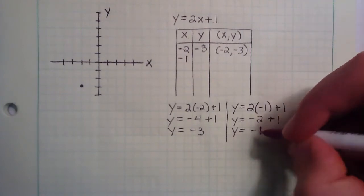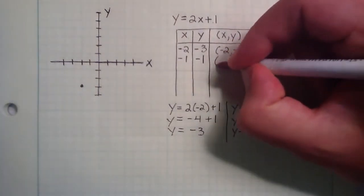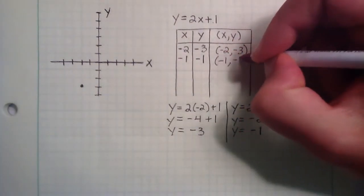So now negative 1 is the y component that corresponds to x equals negative 1. Giving us the point negative 1, negative 1.